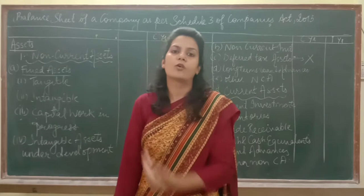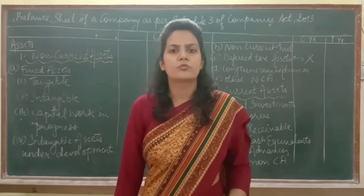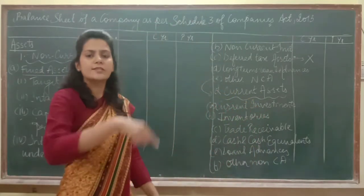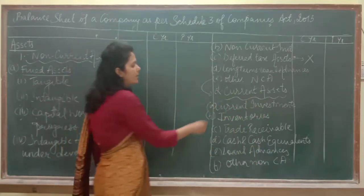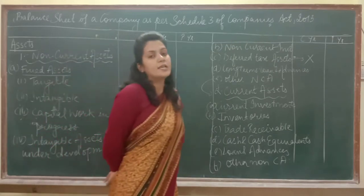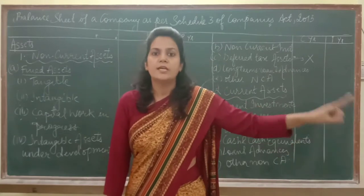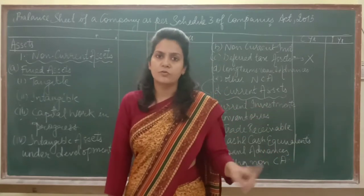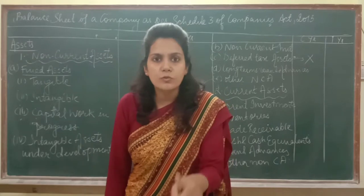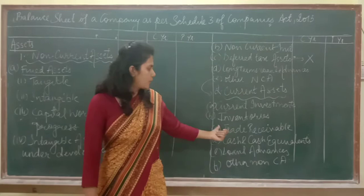Next is intangible assets under development. Suppose I am working on a formula that is not yet complete, or I am writing a book or developing a software that has not been developed yet. It will be classified as an intangible asset, but since it is still under development, we call it 'intangible assets under development.' When it is a tangible asset under development, we call it capital work in progress.